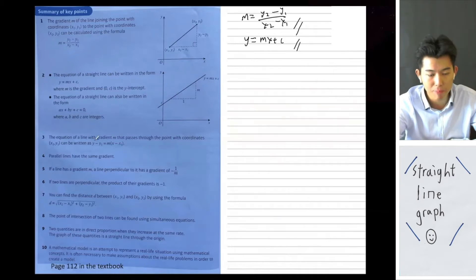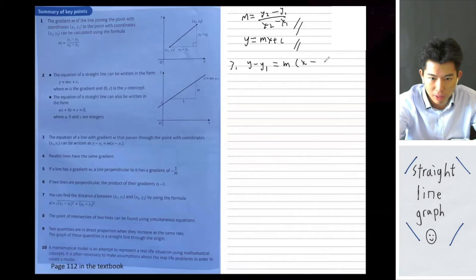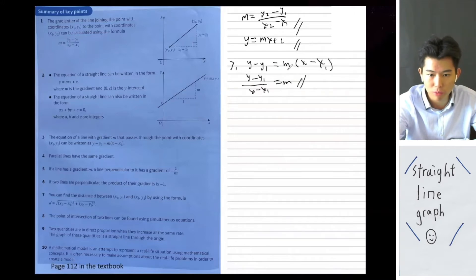For part 3, it's essentially the same as part 1, because the equation y minus y1 equals m times x minus x1 is equivalent. If you divide both sides by the bracket x minus x1, you get y minus y1 over x minus x1, which equals m. So parts 1 and 3 are the same.